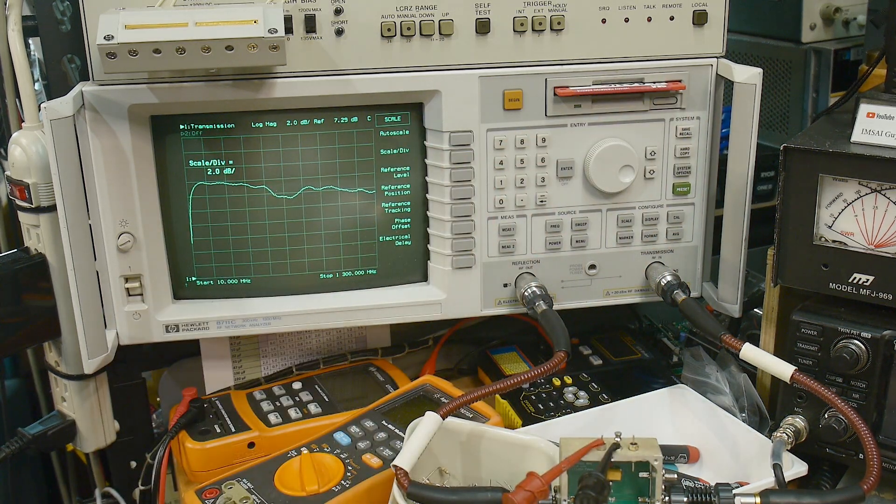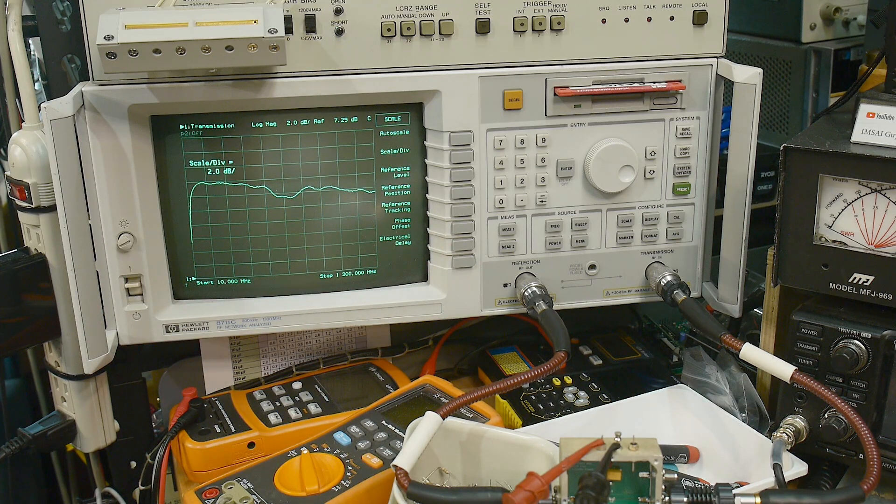Let's go to scale of 2 dB and then we will try to find it again. And reference level. Now we can bring it down. And scale, we got where it's still at 2. So yeah, that's about 2 dB drop there. Very nice.